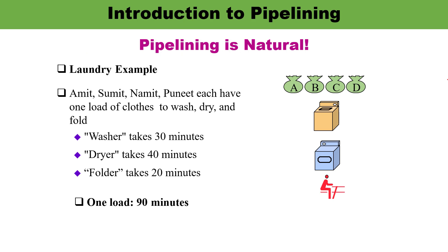Pipelining is natural. You can understand with the help of this example — a very basic and interesting example. I have taken an example of laundry. There are four persons: Amit, Sumit, Namit, and Puneet.